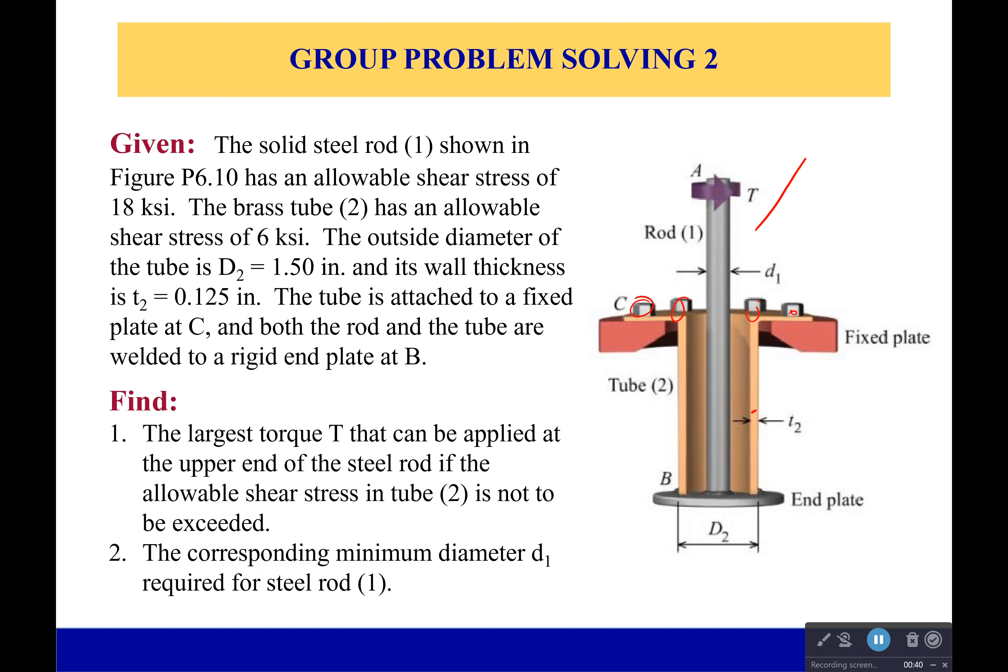Okay, now the brass tube has allowable shear stress of 6 ksi, that's right there. And the steel rod has allowable shear stress of 18 ksi. Now the outside diameter of the tube is 1.5 inches, and its wall thickness is 0.125 inch. Now we really want to know what that largest torque T that we can apply is without causing it to break, and therefore the minimum diameter required for steel rod 1. So what's the maximum torque we can apply without breaking the tube, and the minimum diameter for that.